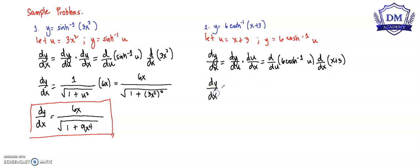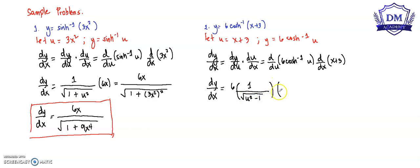So dy/dx is equal to 6 multiplied by the derivative of the inverse hyperbolic sine of u, which is 1 all over the square root of u squared minus 1, multiplied by the derivative of (x plus 3), which is 1. Simplifying, that is 6 all over the square root of (x plus 3) squared minus 1.